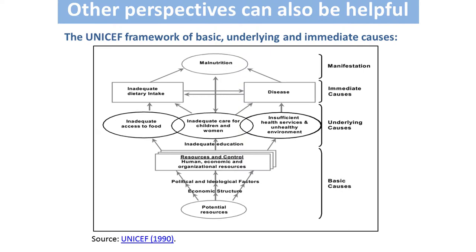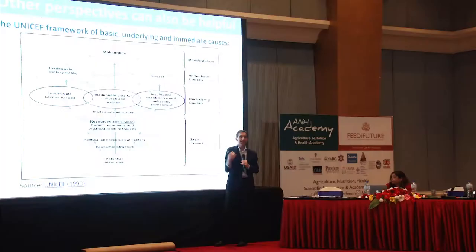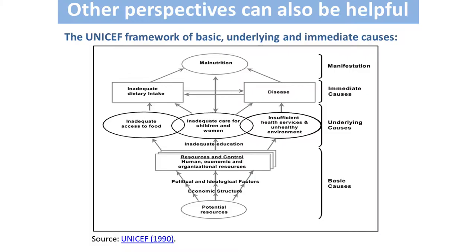Another framework that FSIN stakeholders raised was the UNICEF framework. In 1990, UNICEF — concerned with child nutrition as their highest goal — classified measurement in terms of the manifestation or outcome, which is malnutrition itself, at the top of the picture. That would be child heights, child weight, and so on. Then there are immediate causes like inadequate dietary intake or disease, then underlying causes, then basic causes.